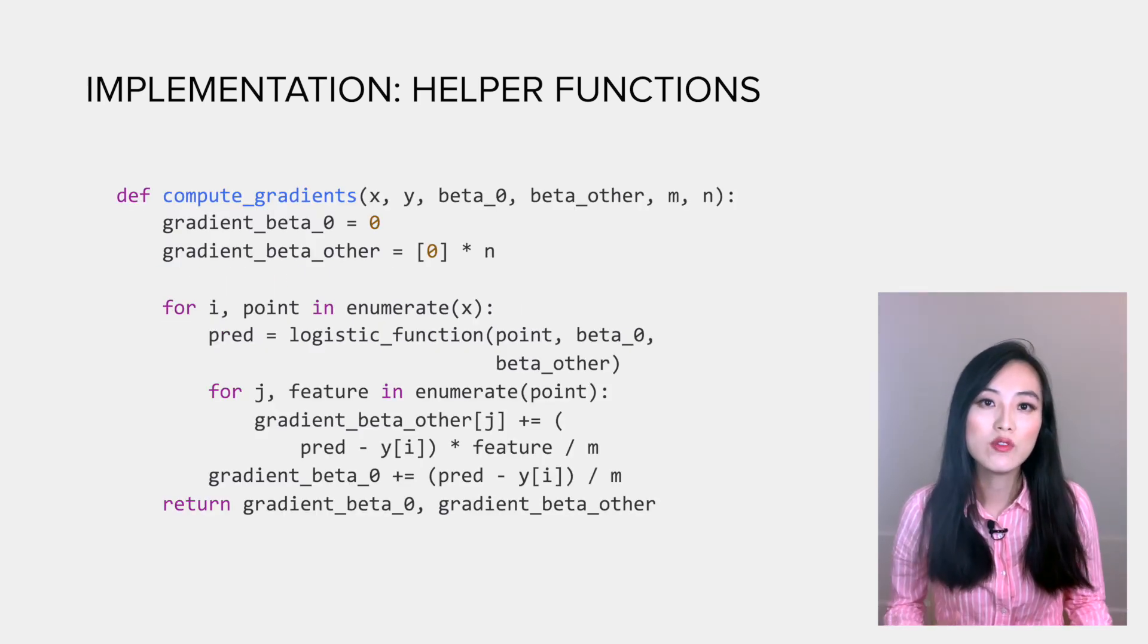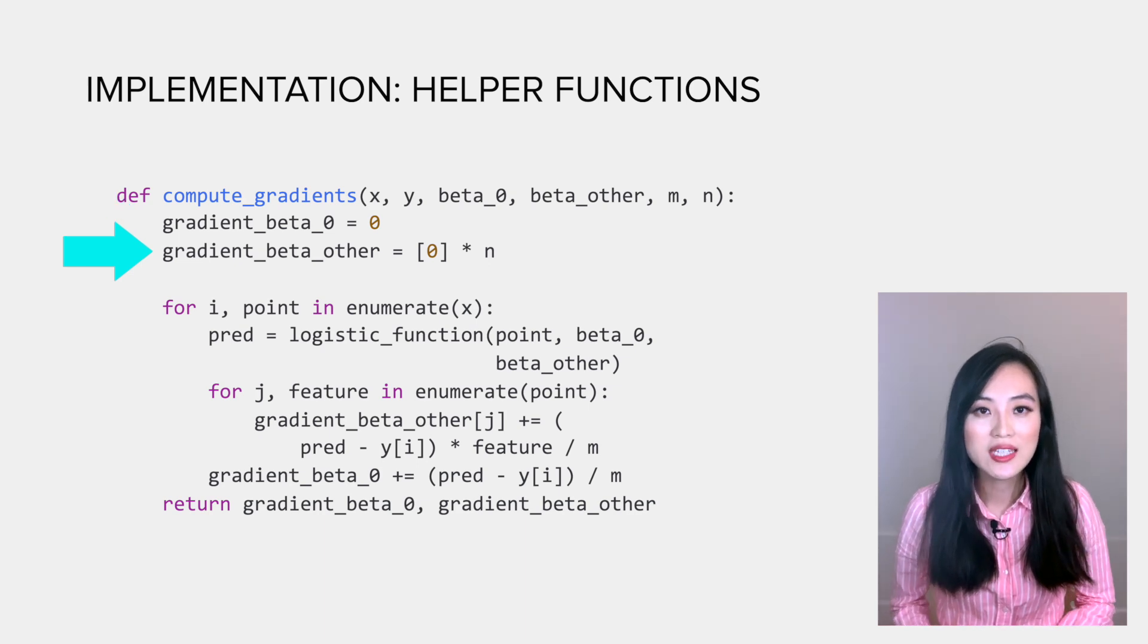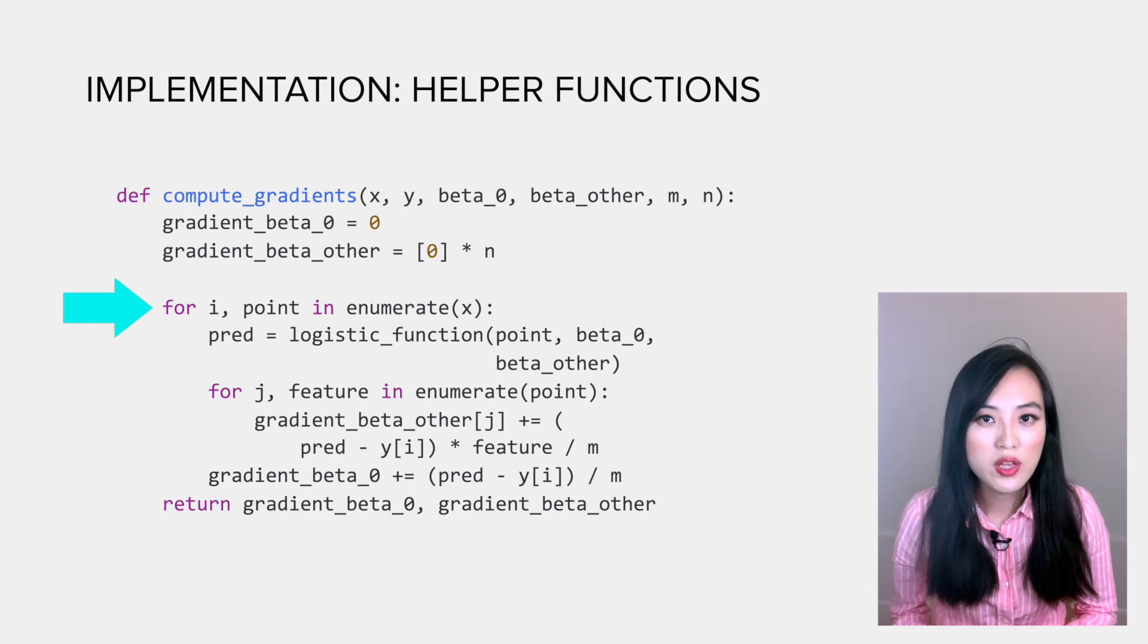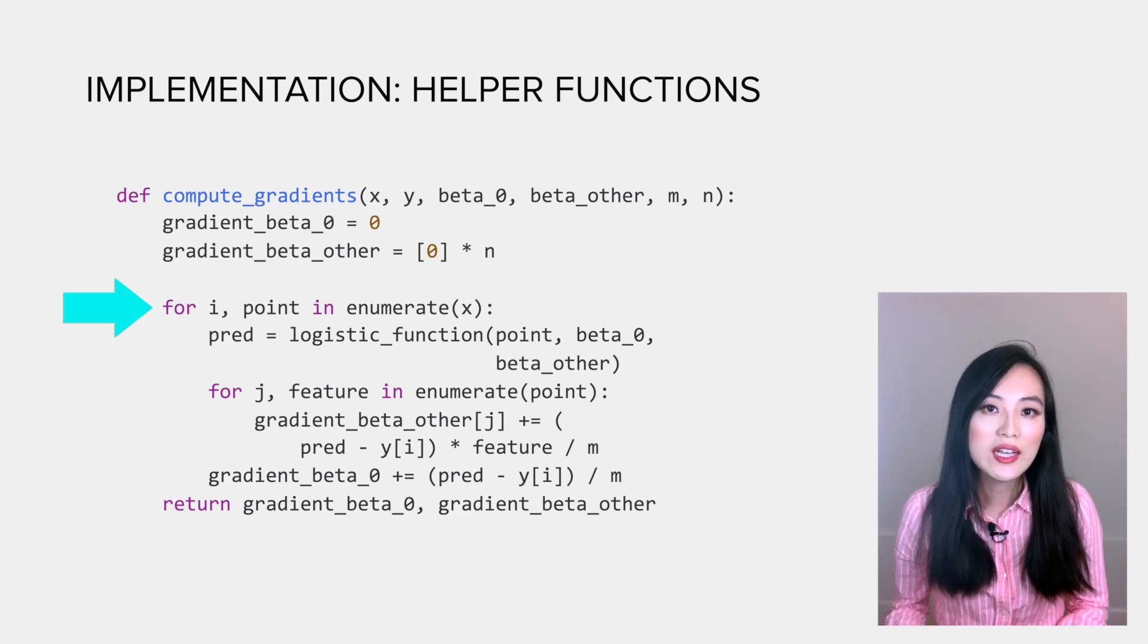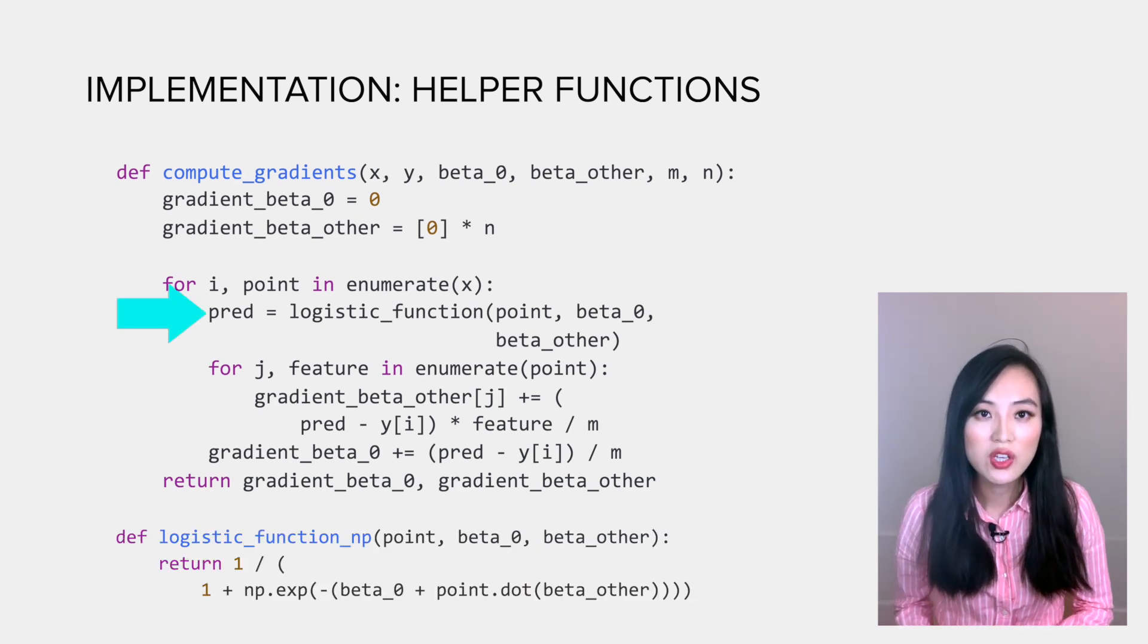The next function is to compute gradients. We have looked at the equation of the gradients at each parameter. We initialize the gradient at beta 0 as 0 and other betas as a vector of zeros. Then we loop through all the data points to accumulate the gradient computed for each data point.